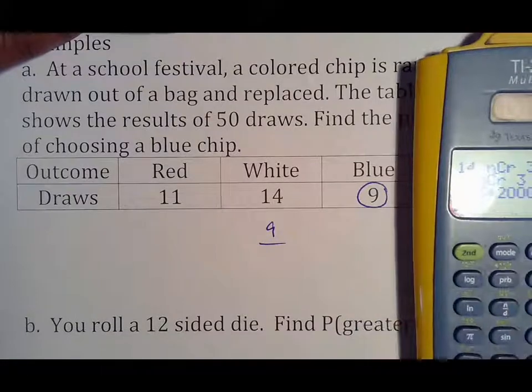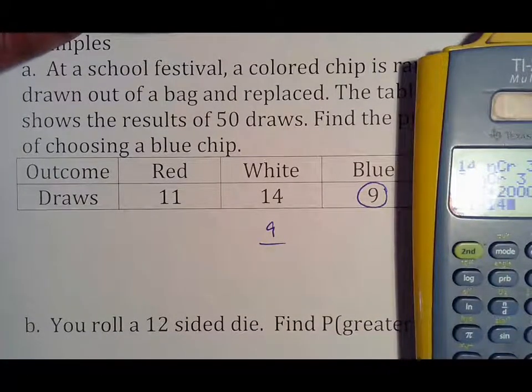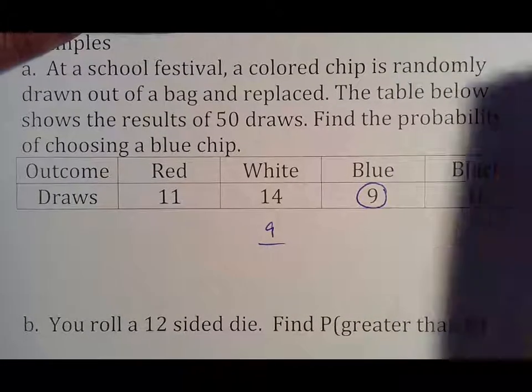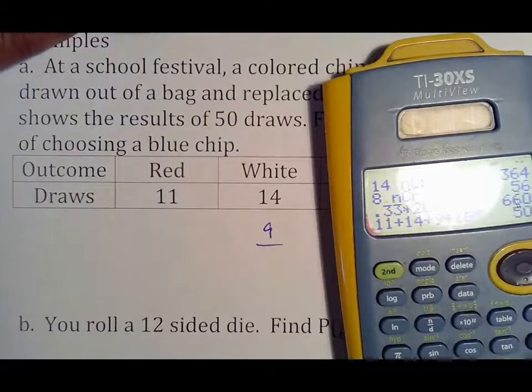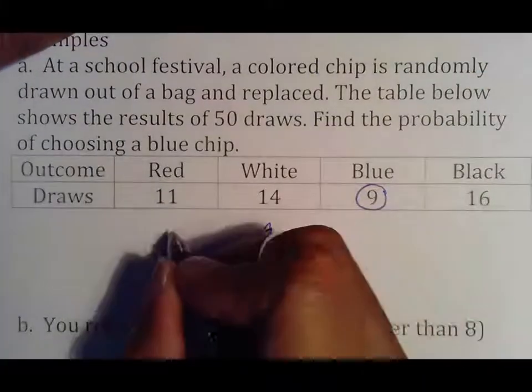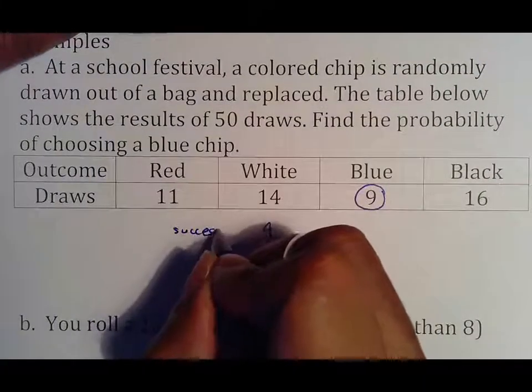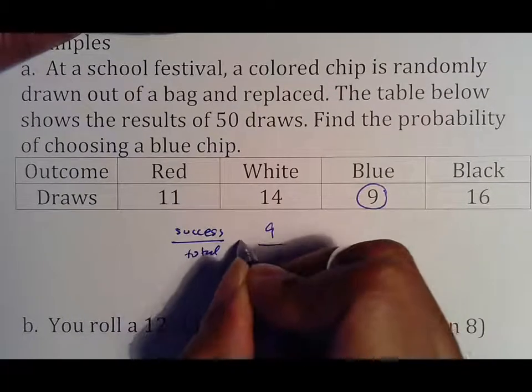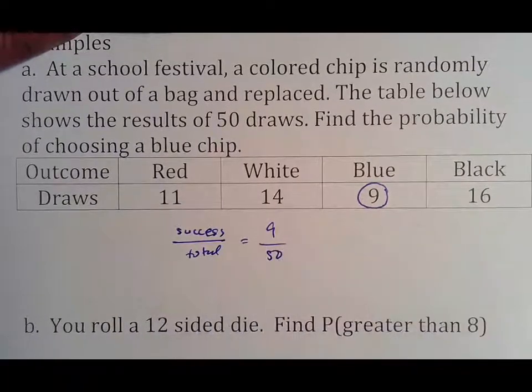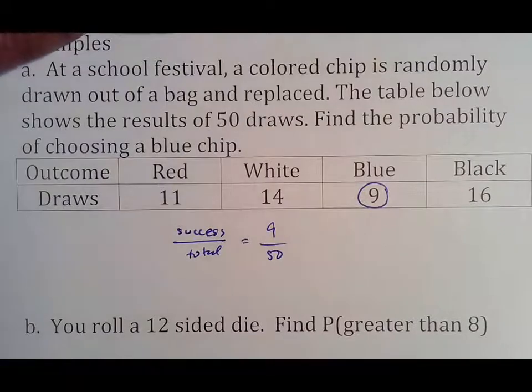So again, based off of this, your probability of drawing a blue chip, total successful draws is 9 because that's what's there. Total number of draws, which should be 50, but I'm just going to add them up to make sure. 16 is 50, so again, success over total gives me 9 over 50.